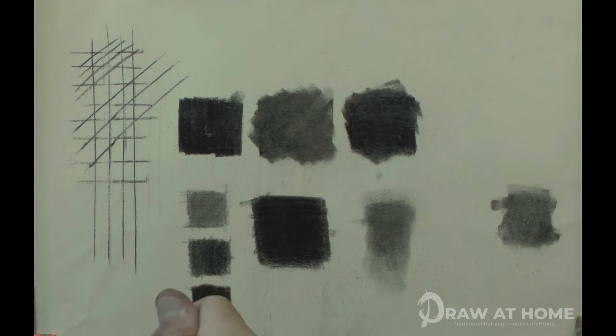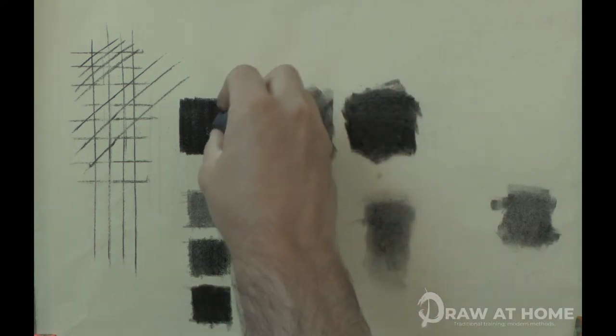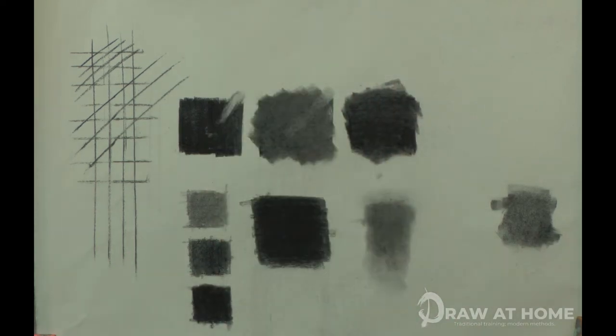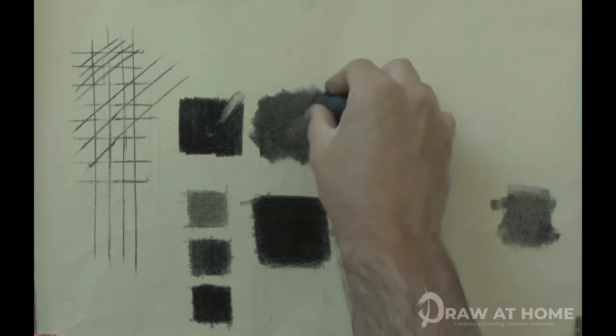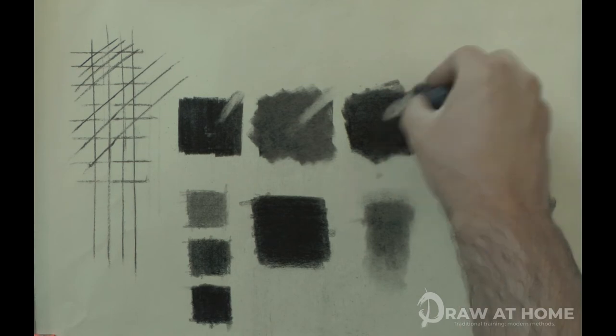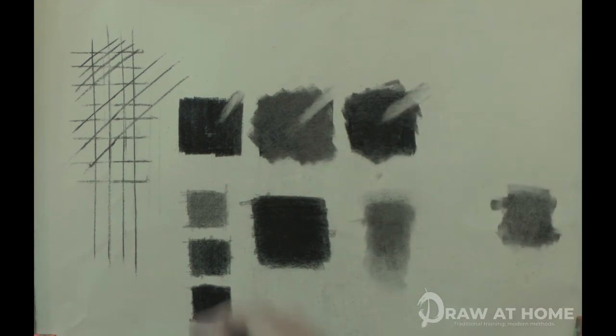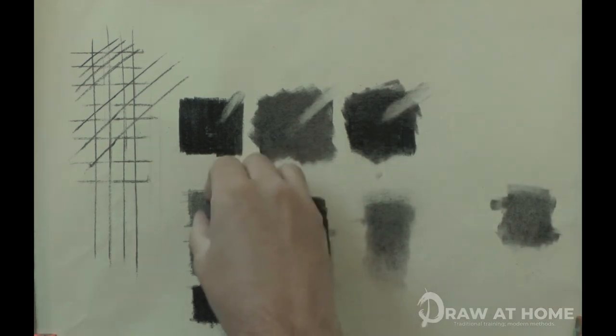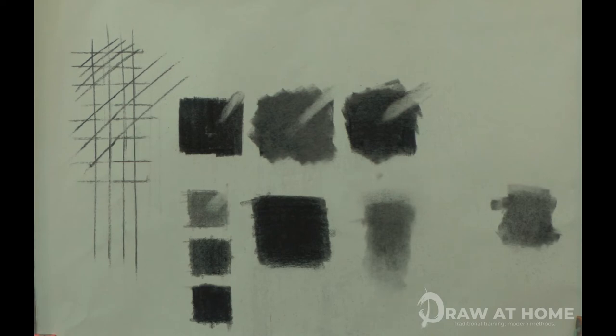You can see by erasing a section of all the patches that the ones with willow on its own come off very easily, whereas when general pencils have been used, it is much harder to remove. This is because general pencils have a waxy binder in them, as the charcoal has been glued into the shaft.